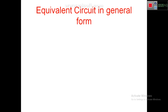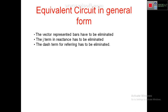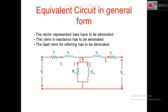For the general form of equivalent circuit, vector bars must be eliminated, the j term in reactance must be eliminated, and dash terms for referring to primary and secondary must also be eliminated. The result is a simple circuit with primary resistance and inductance, secondary resistance and inductance, a shunt branch, voltages, and currents — nothing more. All dash terms are removed. This is the general form of equivalent circuit.